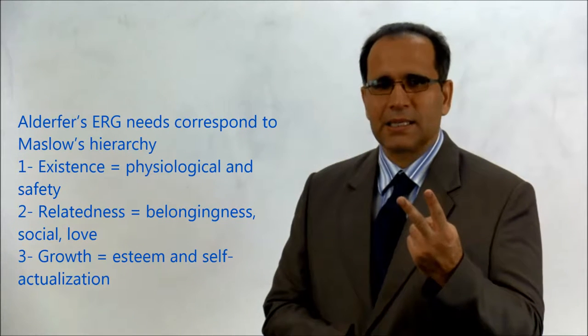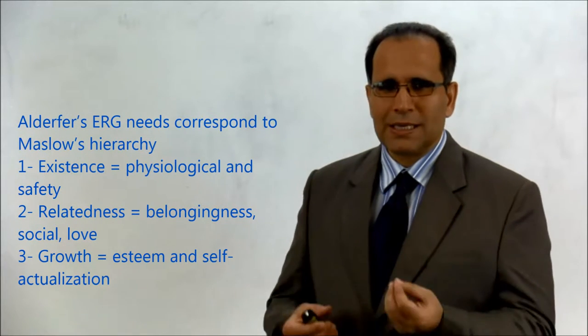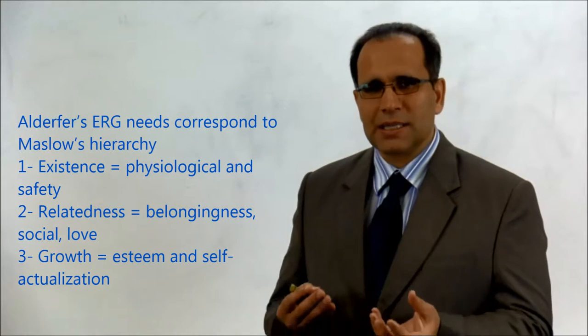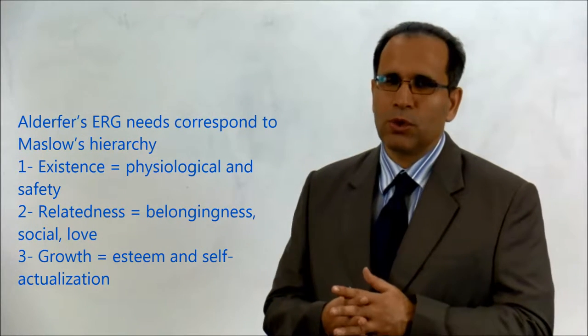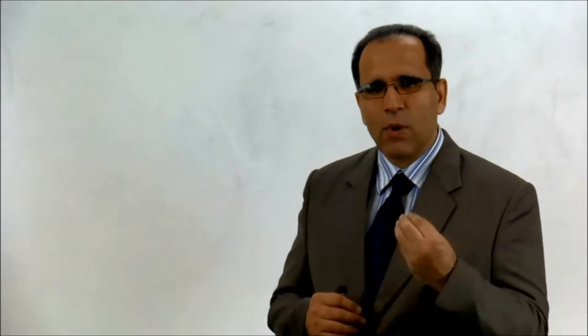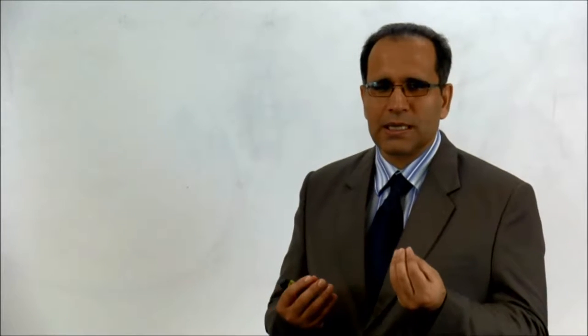Alderfer's ERG needs correspond to Maslow's hierarchy as well. So you have the E, which means existence, the R for relatedness, and G for growth needs. So existence needs would be the physiological and safety, relatedness needs would be the belonging, social, and love, and the growth needs would be esteem and self-actualization needs. So there's a frustration regression process that exists. If one continually fails to satisfy growth needs, the related needs reemerge. Efforts will be redirected towards satisfying a lower order need.